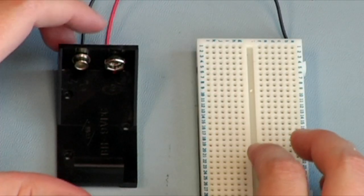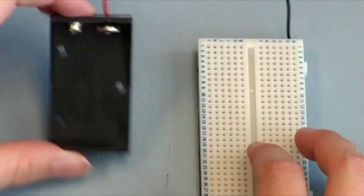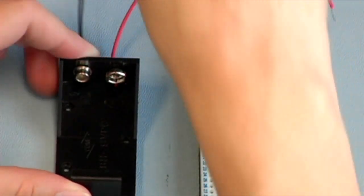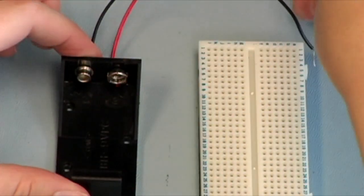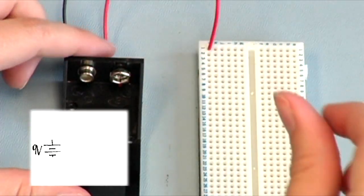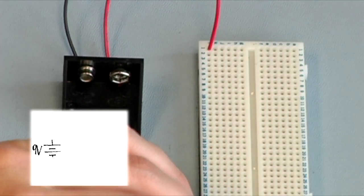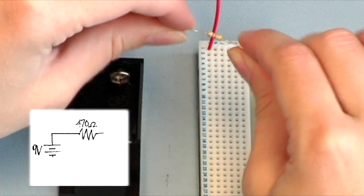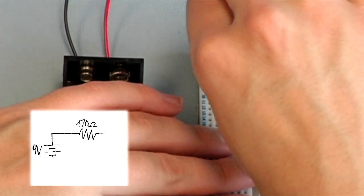Just take each connection one step at a time. Here we have a 9 volt battery holder, and this red wire represents the positive terminal, and the black wire represents the negative terminal. So let's just start with the positive terminal of the battery. In the schematic, it's connected to one end of the 470 ohm resistor. So let's do that.